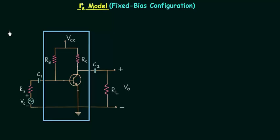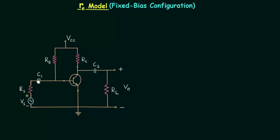In case of DC analysis we only have to consider the circuit inside the rectangle, because capacitors C1 and C2 will remain open circuited for DC. We generally use DC analysis to find out the operating point, and we also find out input and output DC currents and voltages. But here we have to perform the AC analysis.